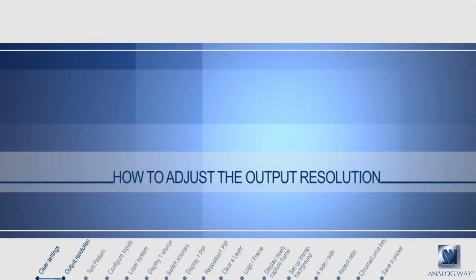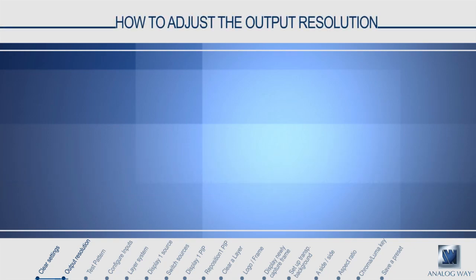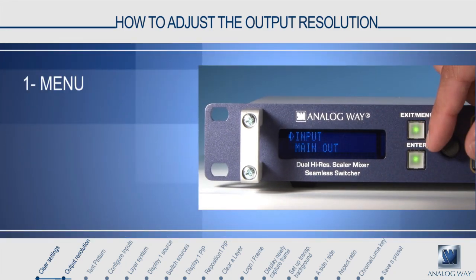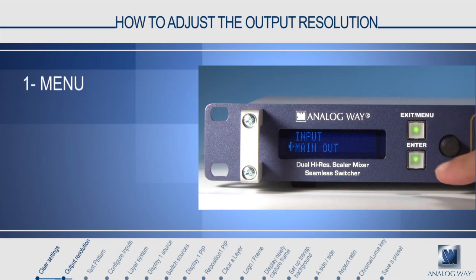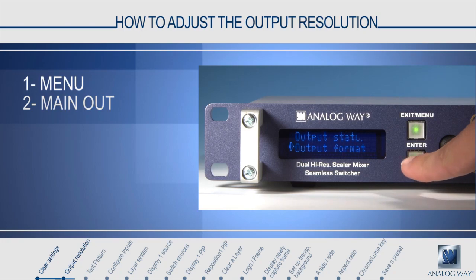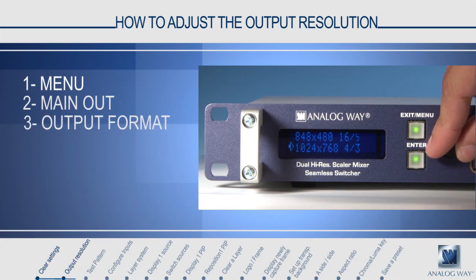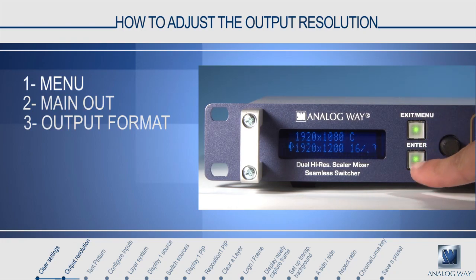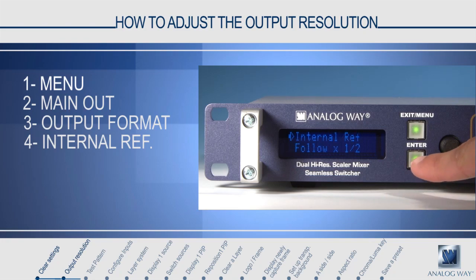How to adjust the output resolution. The first thing you may wish to do is adjust the output resolution. Press menu and navigate to main out or preview out. Select output format and choose the resolution you'd like to use. Today we'll be using 1920 by 1200. Select internal reference and then choose the frame rate. Press enter and your resolution will be selected.